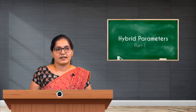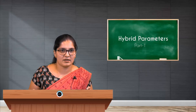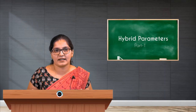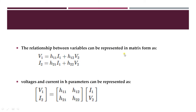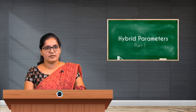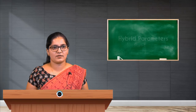The relationship between the variables can be represented in matrix form. The two relations between the hybrid parameters in matrix form are written as: [V1, I2] = [h11, h12; h21, h22] × [I1, V2]. This is the matrix form of the hybrid parameter representation.